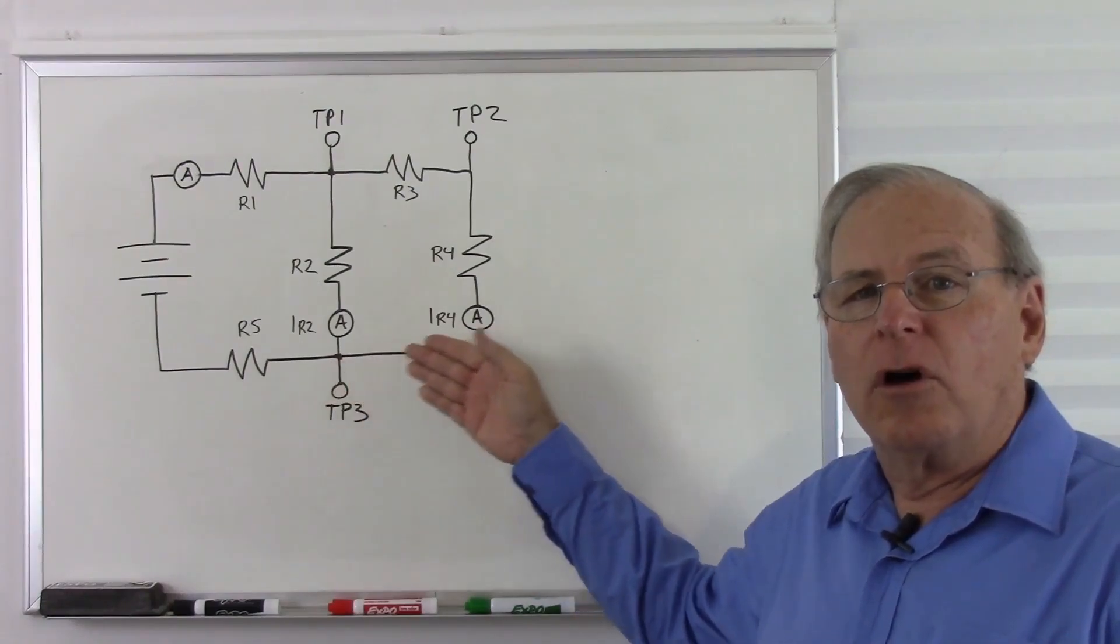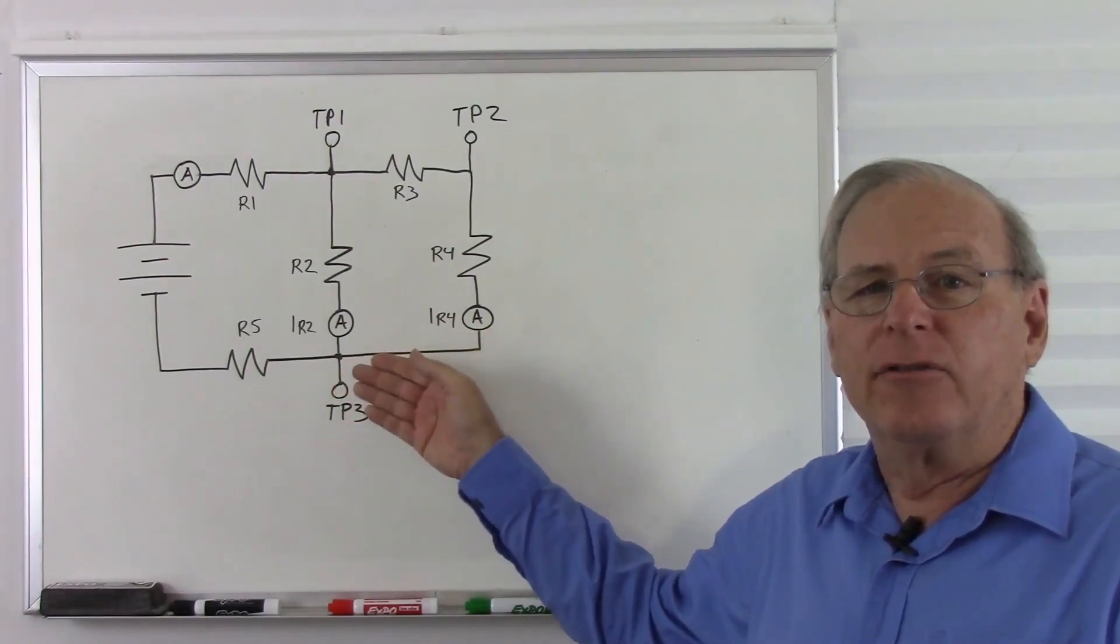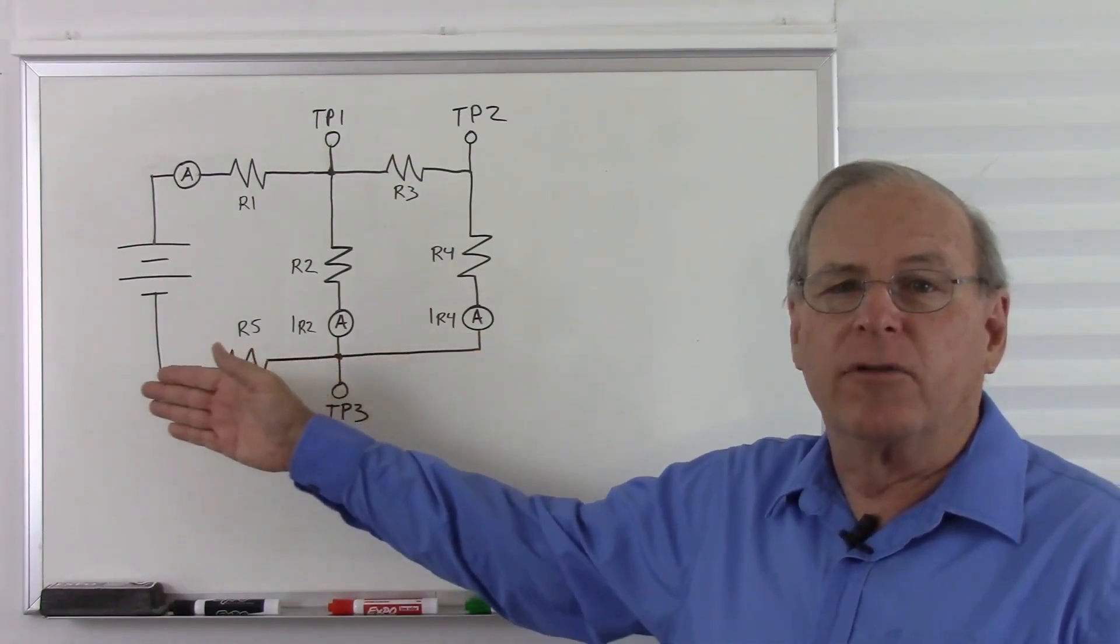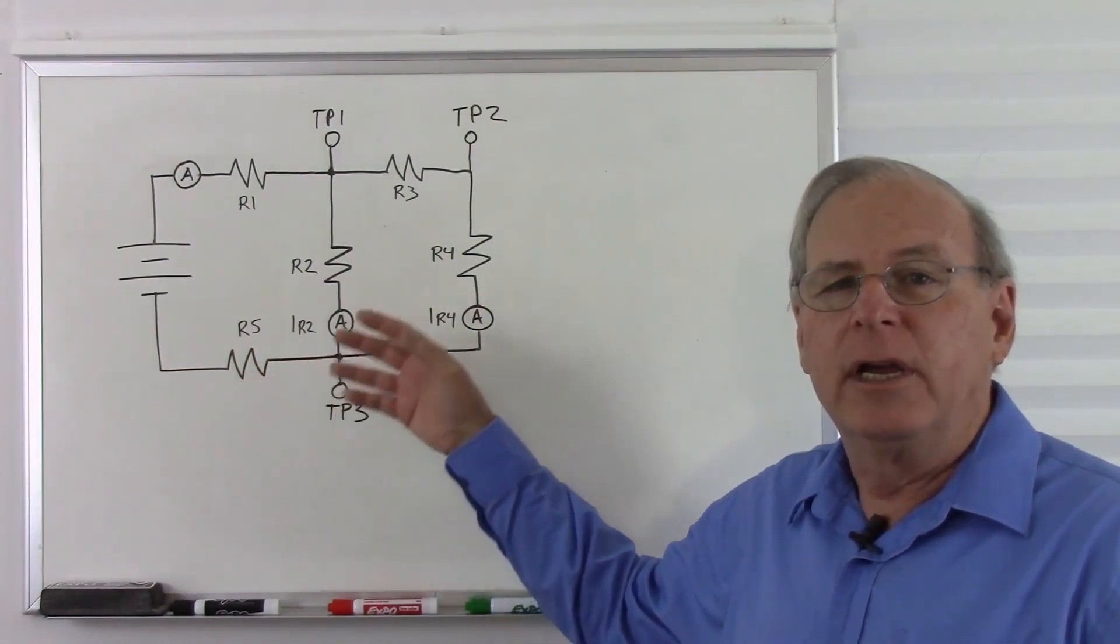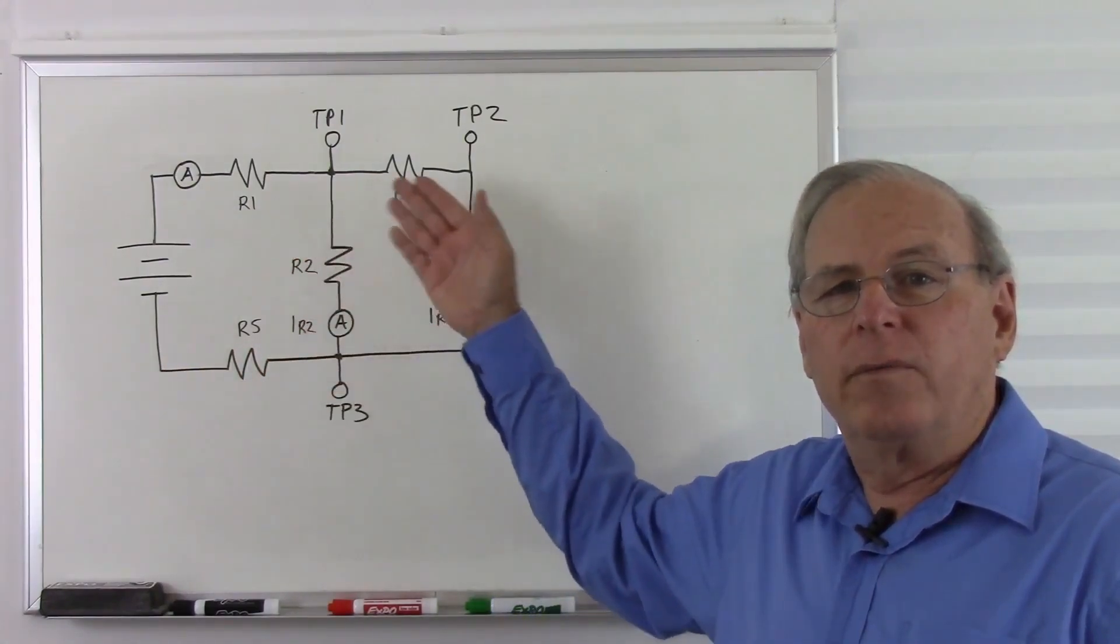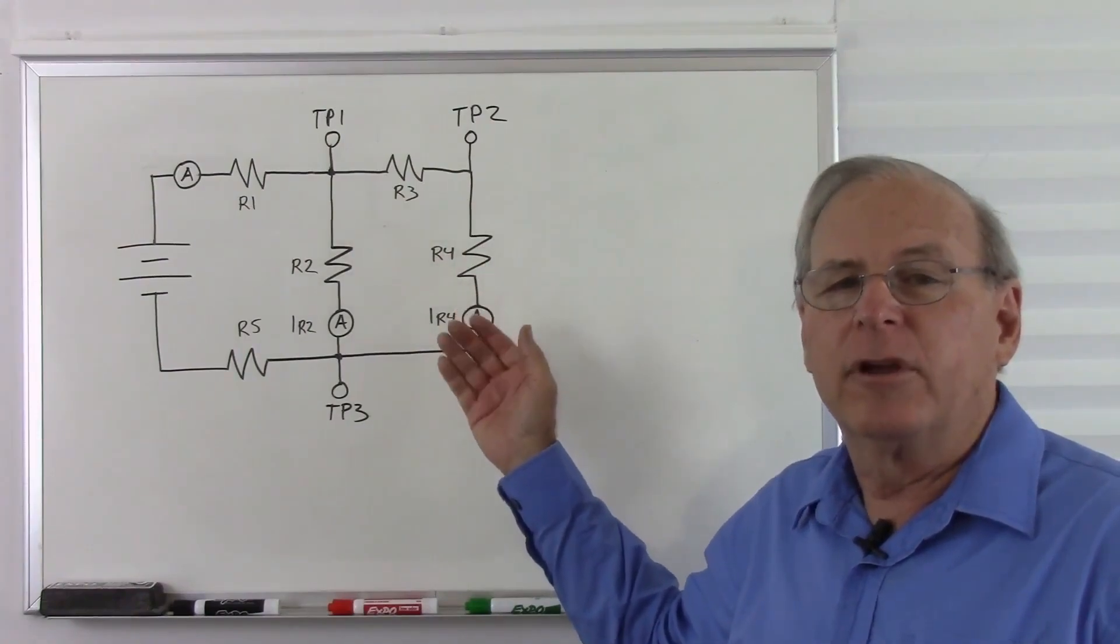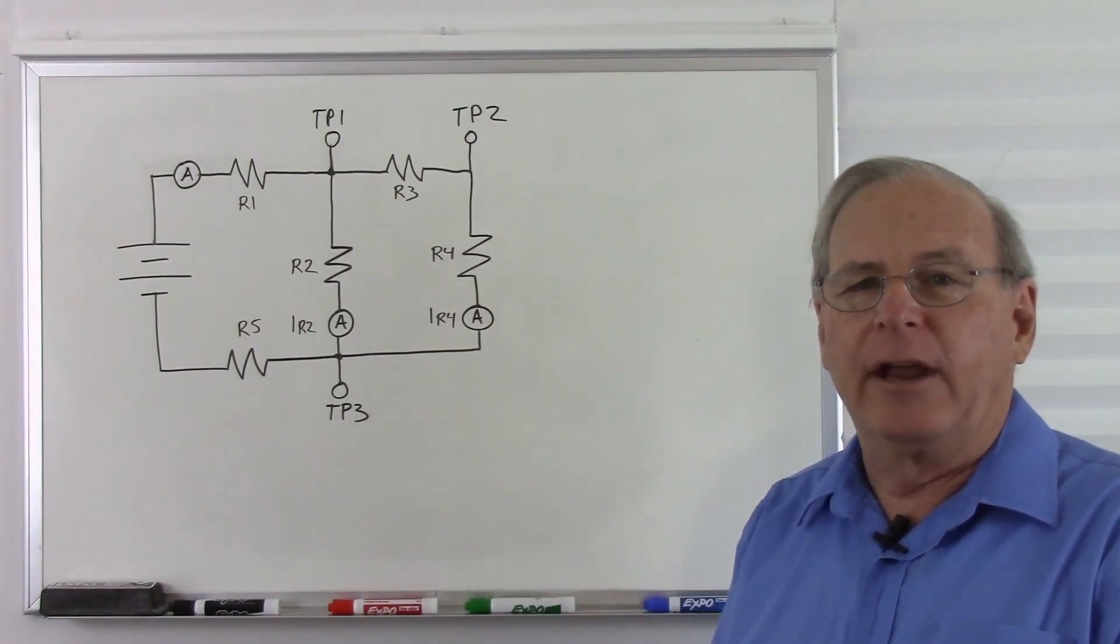This area here is no longer zero volts, it's something higher than zero because we are separated from our zero volts by a resistor with current going through it. So we'll have to take that into account when measuring the other parameters.